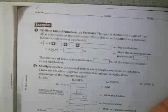And this one is writing mixed numbers as percents. The sports stadium at a school has four and two-thirds as many seats as the auditorium. Write this mixed number as a percent. Round to the nearest hundredth. So what your calculator does here may seem a little confusing, but hopefully it's not. What you can do here is type in four plus and then two divided by three.